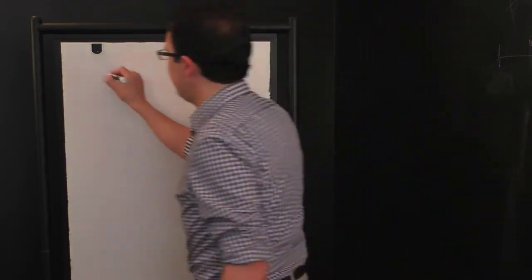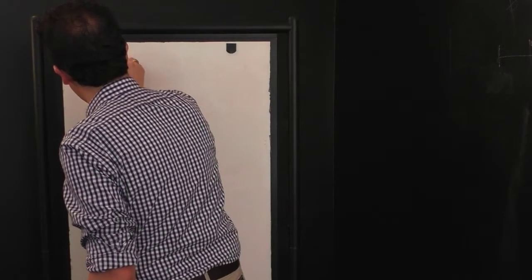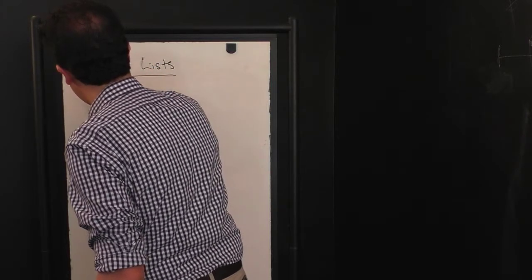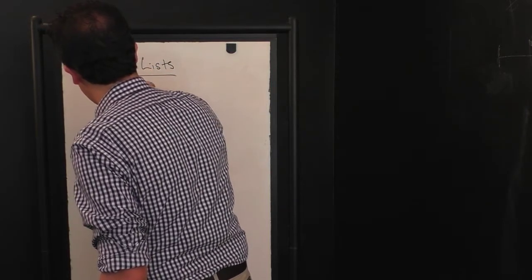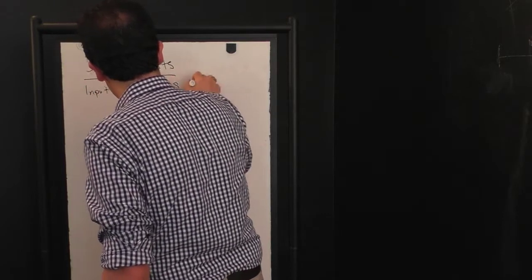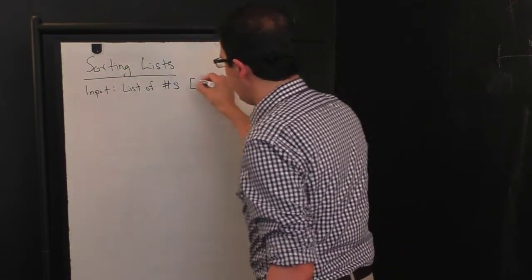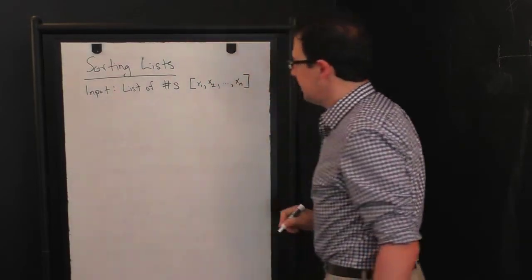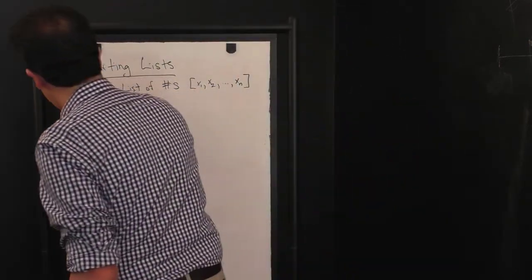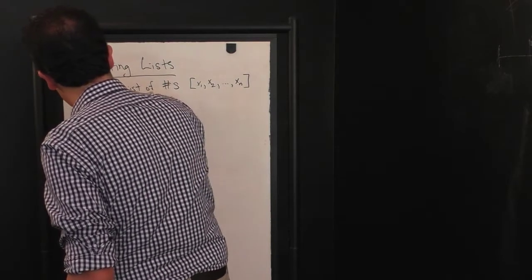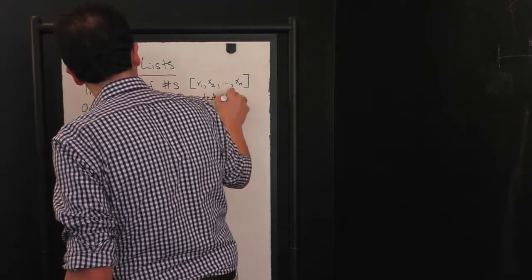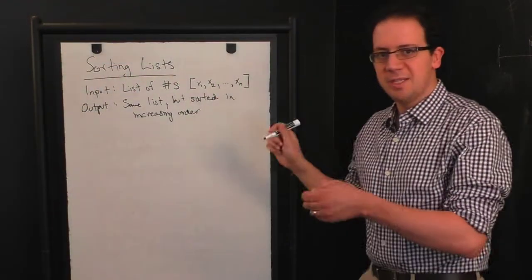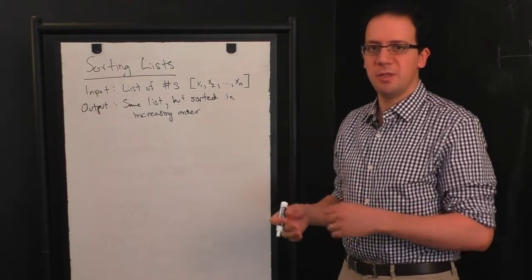So we're going to start out with a very simple problem, which is sorting lists of numbers. The idea here is the input is some list of numbers, which we're going to denote x1, x2, up to xn. And the output is the same list, but sorted in, let's say, increasing order. And if some of the xi's are the same, that doesn't matter. They should appear next to each other in the list. So it's technically non-decreasing order, but that's not really going to affect anything we're talking about.